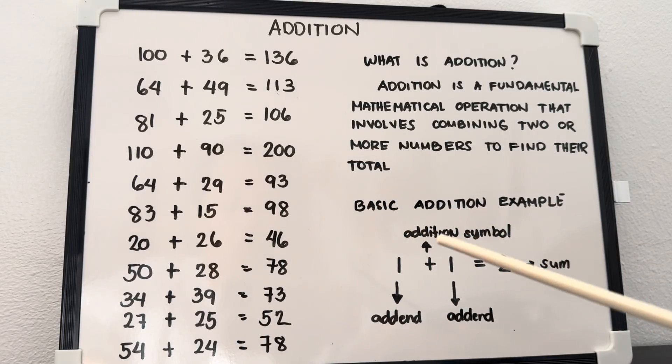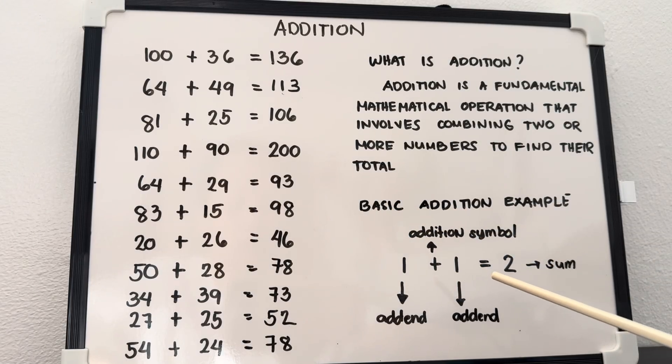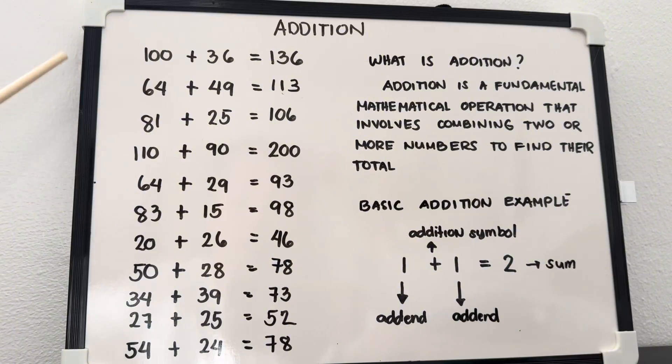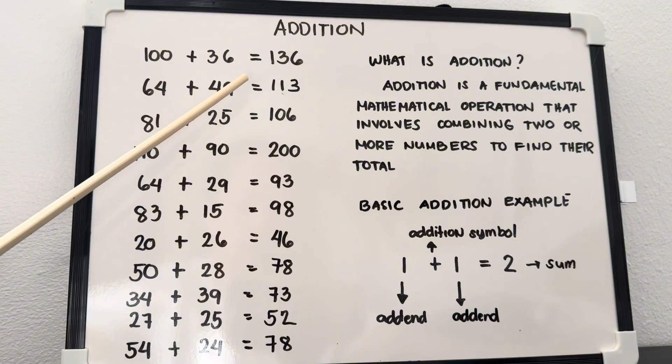Let's check out a basic addition example: 1 plus 1 equals 2. 1 is the addend, plus is the addition symbol, 1 is the other addend, and 2 is the sum.